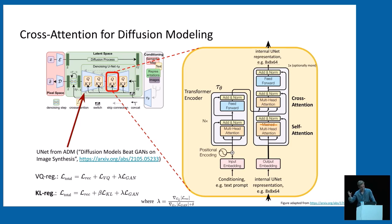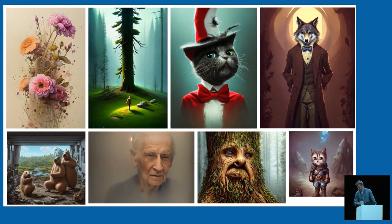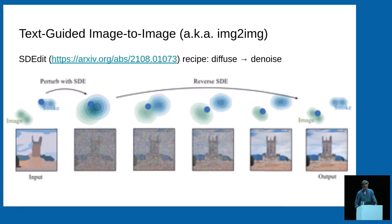You could either train this encoder jointly with the diffusion model or take a pre-trained language model approach — both work quite well. We took that approach and were able to do a collaboration with Stability AI, trained it on 256 A100 GPUs for 600 hours, and arrived at a checkpoint of 815 million parameters, 2.1 gigabytes. That is the Stable Diffusion model. These are text-to-image samples from Stable Diffusion 1.4 — I collected them on Discord because I'm not as talented as other people at prompting.